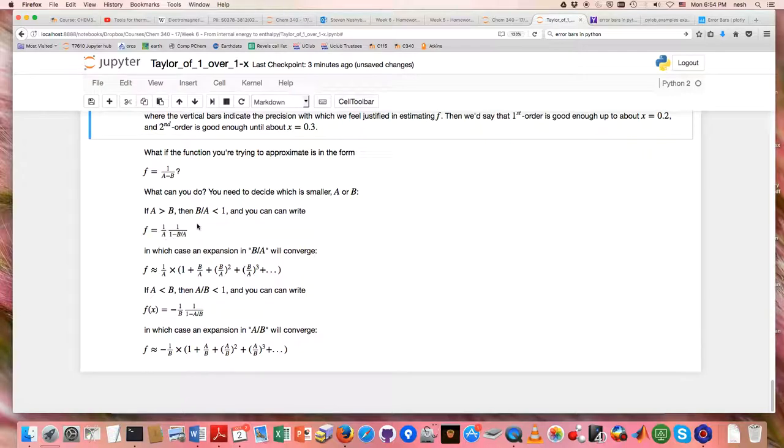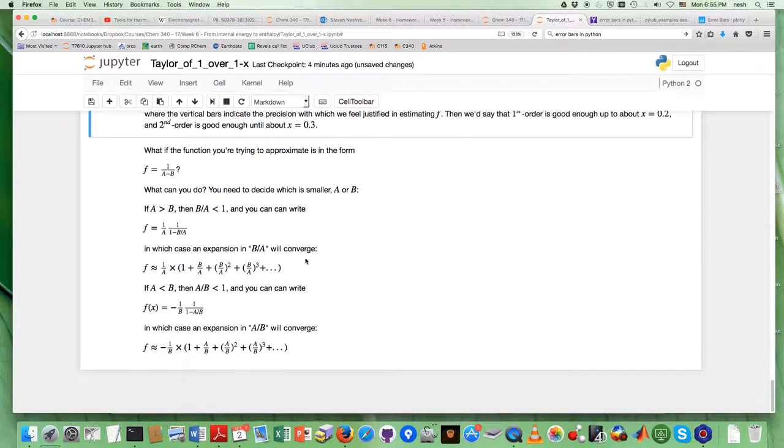If you do the algebra there, then what you end up with is being that f is equal to 1 over a, which you don't really care about for the expansion, because this part here now looks like 1 over 1 minus x. That b over a would be x, in which case the expansion will look like that's that 1 over a part, and here's the rest of it, doing 1 plus x plus x squared, and so forth.